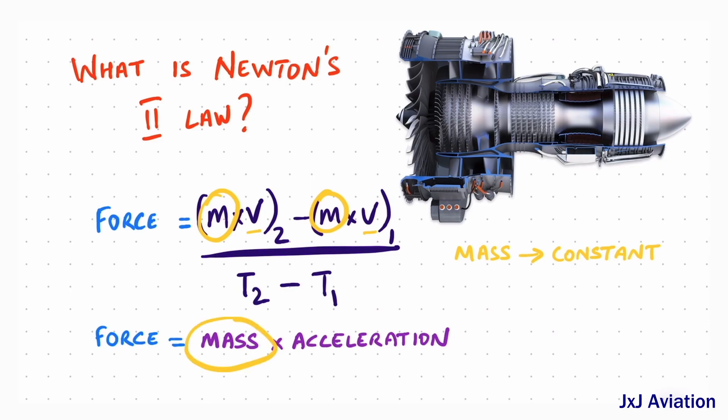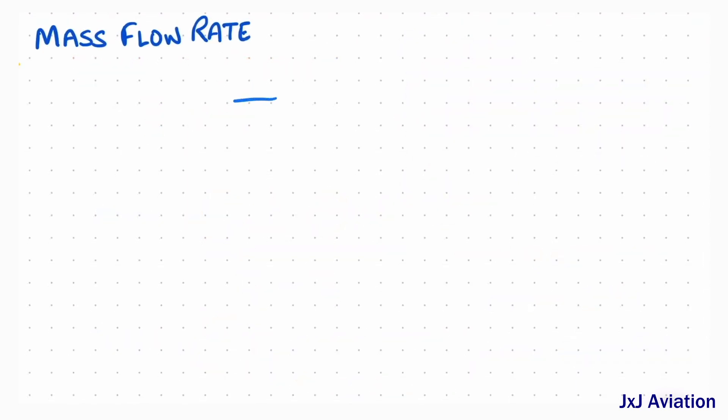Here the mass is applicable only for a solid object. Since air is a fluid, we have to use mass flow rate. Mass flow rate is defined as the amount of mass moving through a plane over time. It is computed as density times velocity times area.